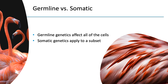Now that we understand what a genetic variant is, we have another concept to add to the mix: germline variation versus somatic variation. Germline genetics means those genes and alterations that were present in the embryo and are passed on to all of the cells. Somatic genetics refers to genes and alterations that are acquired over time and therefore affect some but not all of the cells in the body.